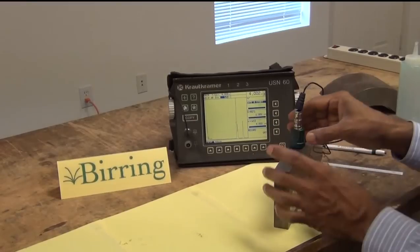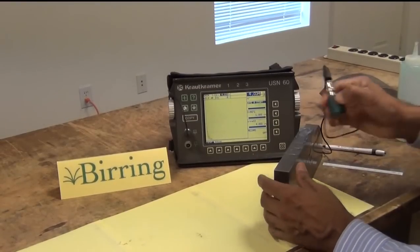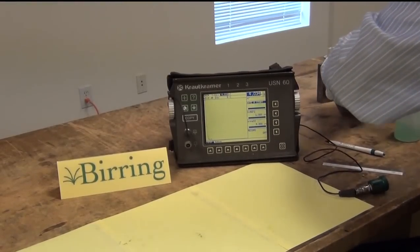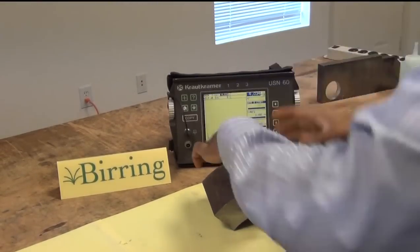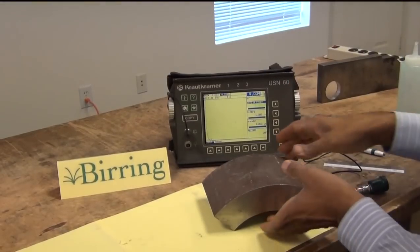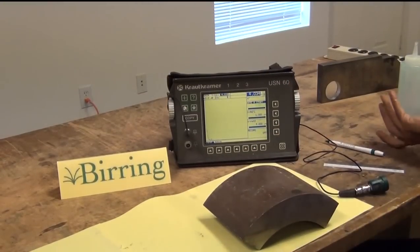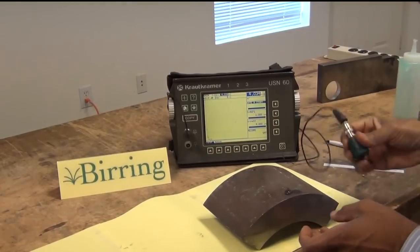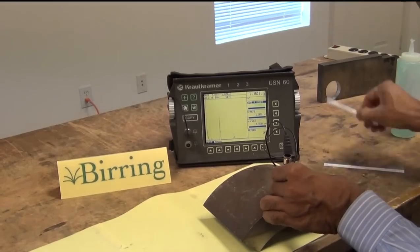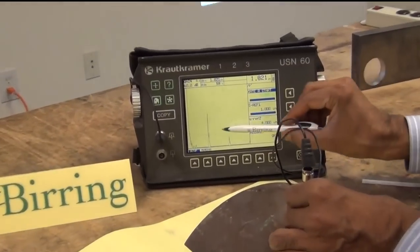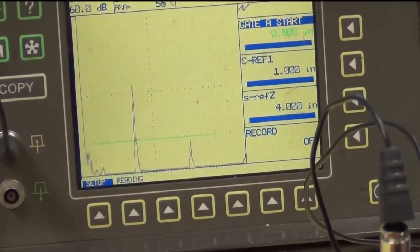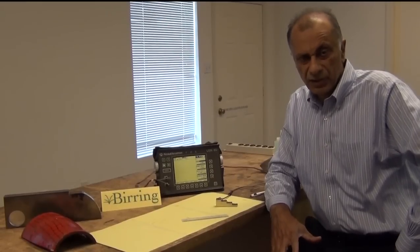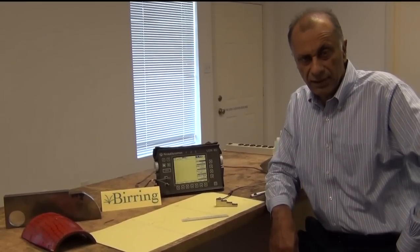So that completes the calibration with the single probe and if I have to take a measurement for example on this thick piece which looks like about 2 inches. So we apply the couplant again and put the probe and here we go the signal is here right there and the thickness being measured is 1.821 inches. That was a brief description of the calibration process for thickness measurement.